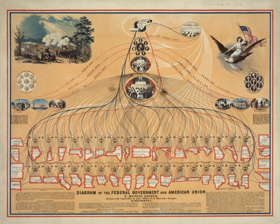Separate from, but not entirely independent of, this federal court system are the court systems of each state, each dealing with — in addition to federal law when not deemed preempted — a state's own laws, and having its own court rules and procedures. Although state governments and the federal government are legally dual sovereigns, the Supreme Court of the United States is in many cases the appellate court from the state Supreme Courts, absent the court countenancing the applicability of the doctrine of adequate and independent state grounds. The Supreme Courts of each state are by this doctrine the final authority on the interpretation of the applicable state's laws and constitution. Many state constitution provisions are equal in breadth to those of the U.S. Constitution, but are considered parallel.